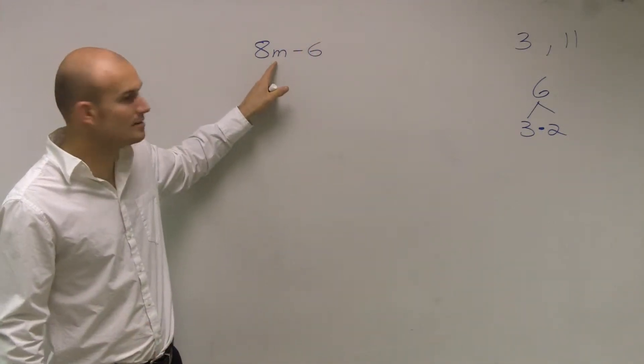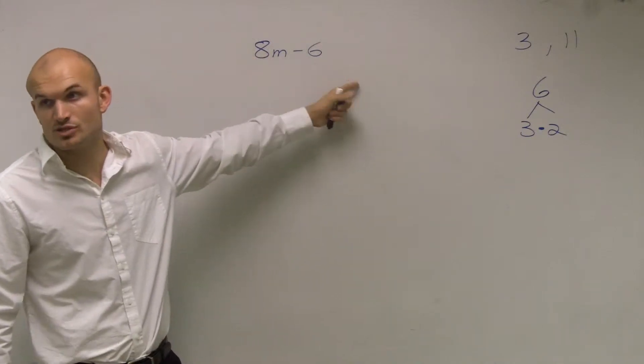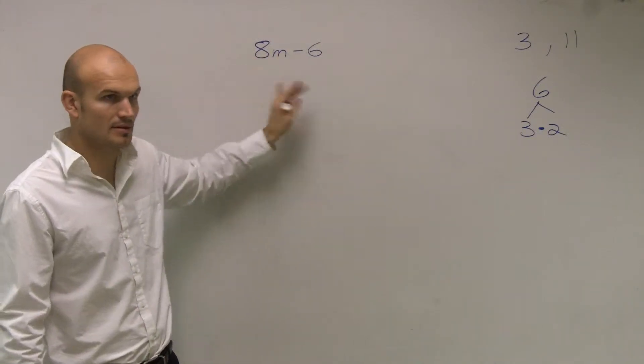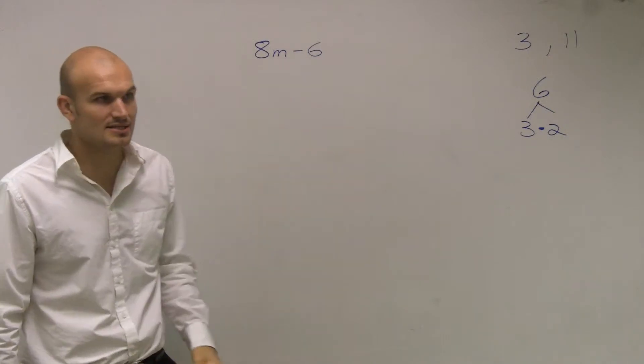Remember, we can only combine like terms when they have the same base and the same exponent. Well this has an m with it, this is 8 times m, and this doesn't have an m. So you could not combine them. So you leave them just like that, 8m minus 6.